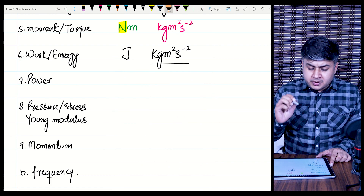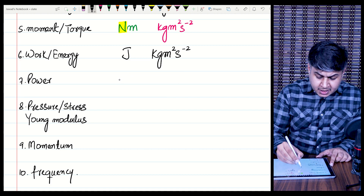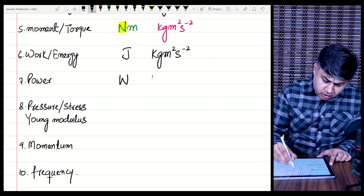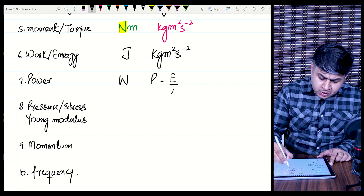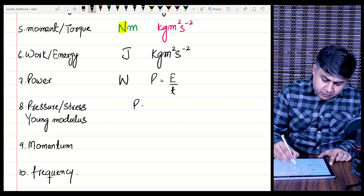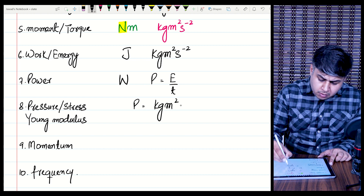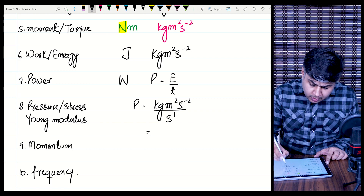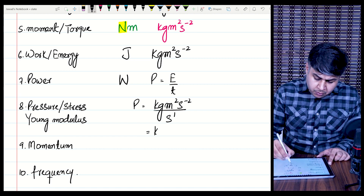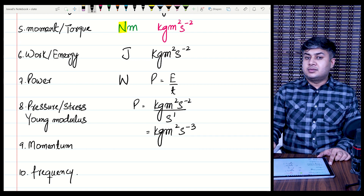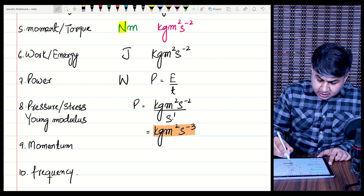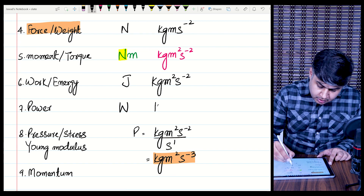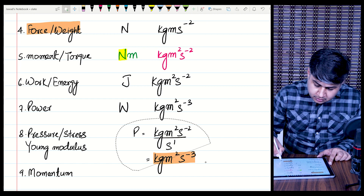Now find the base unit of power. The SI unit for power is Watts. Using the formula power = energy per unit time (or work done per unit time): the base unit of energy is kg·m²·s⁻², and the base unit of time is seconds. Dividing, the second in the denominator adds power of minus 1, giving a final base unit for power of kg·m²·s⁻³.